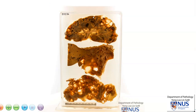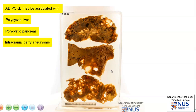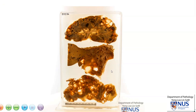Some of them can be associated with polycystic diseases in the liver, as well as more rarely in the pancreas. Another important pathology that may be associated with this is the presence of intracranial berry aneurysms. It's important to pick these up because the patients will be at risk for subarachnoid hemorrhage, which can potentially be fatal. There may also be cardiac abnormalities, such as mitral valve prolapse.